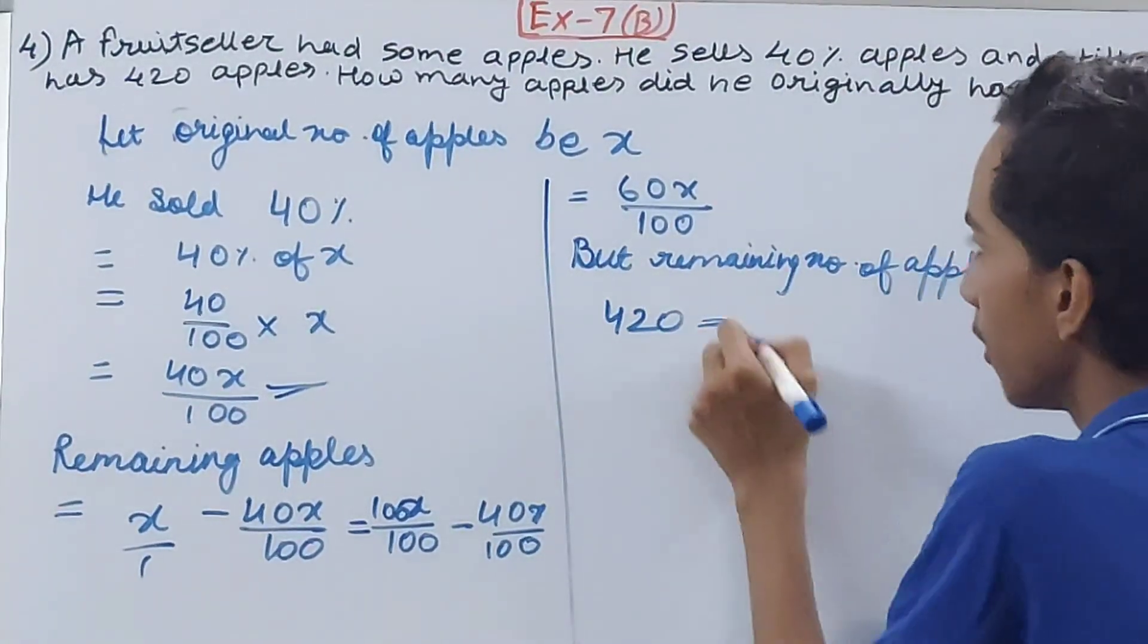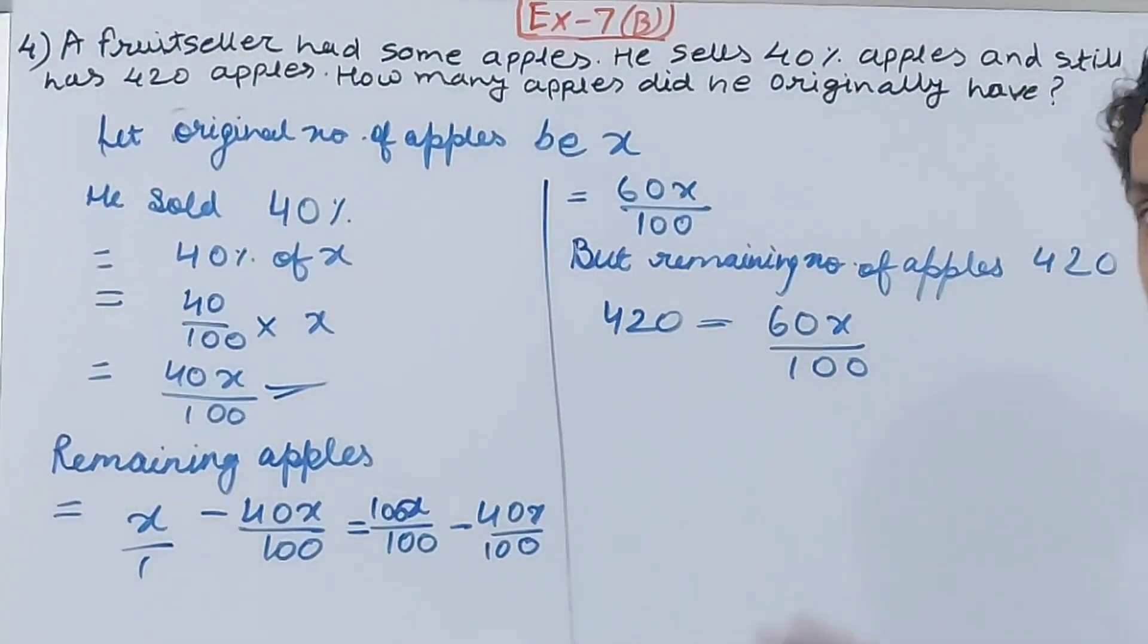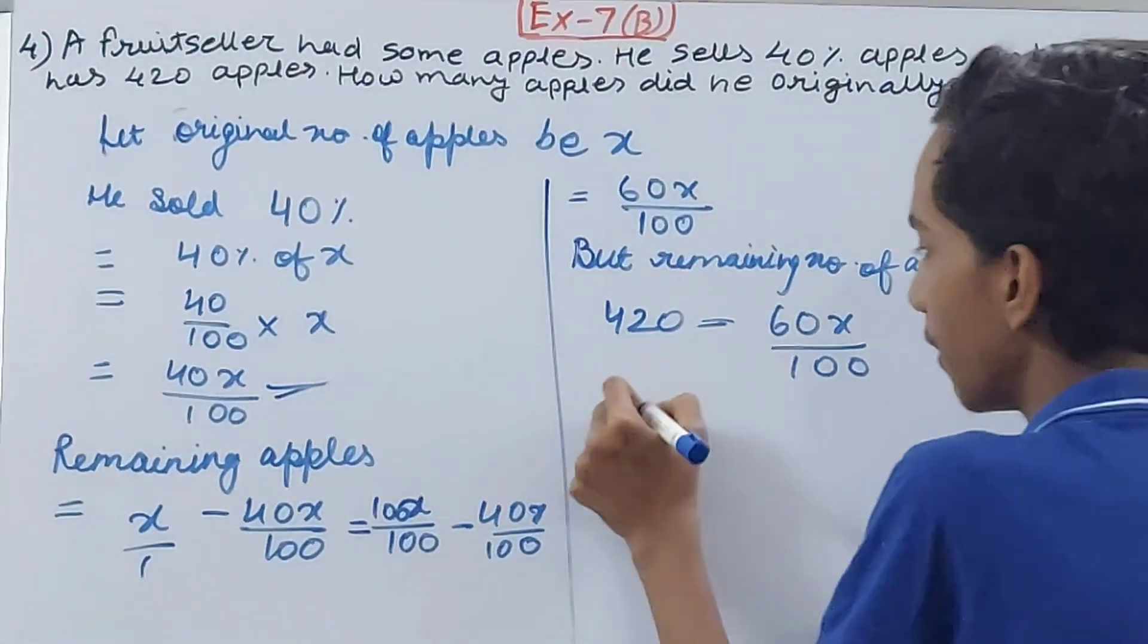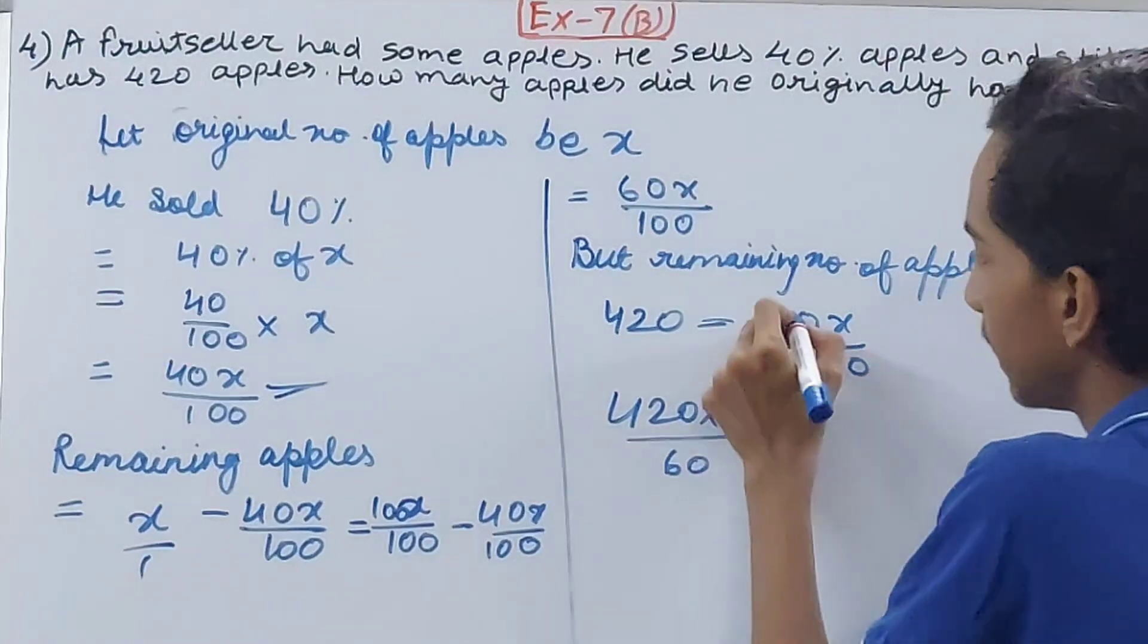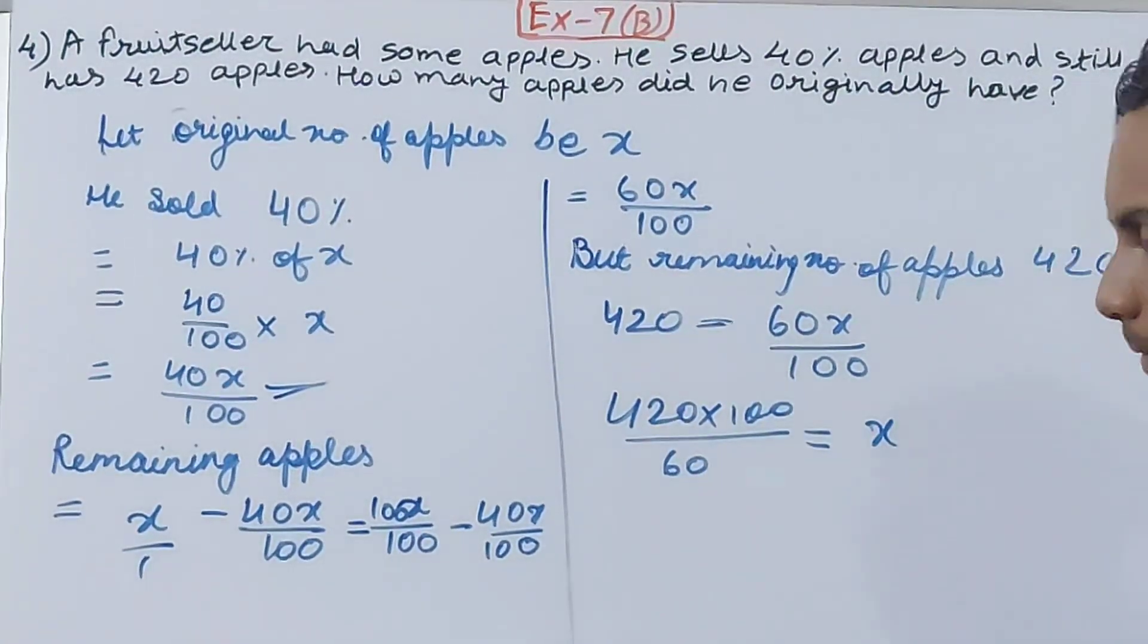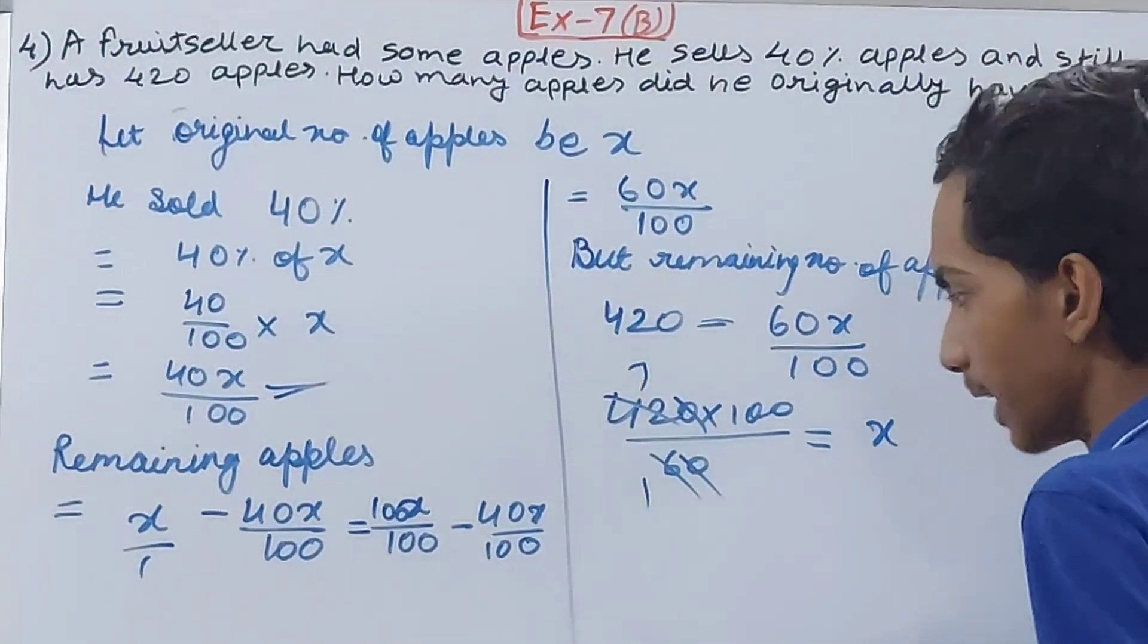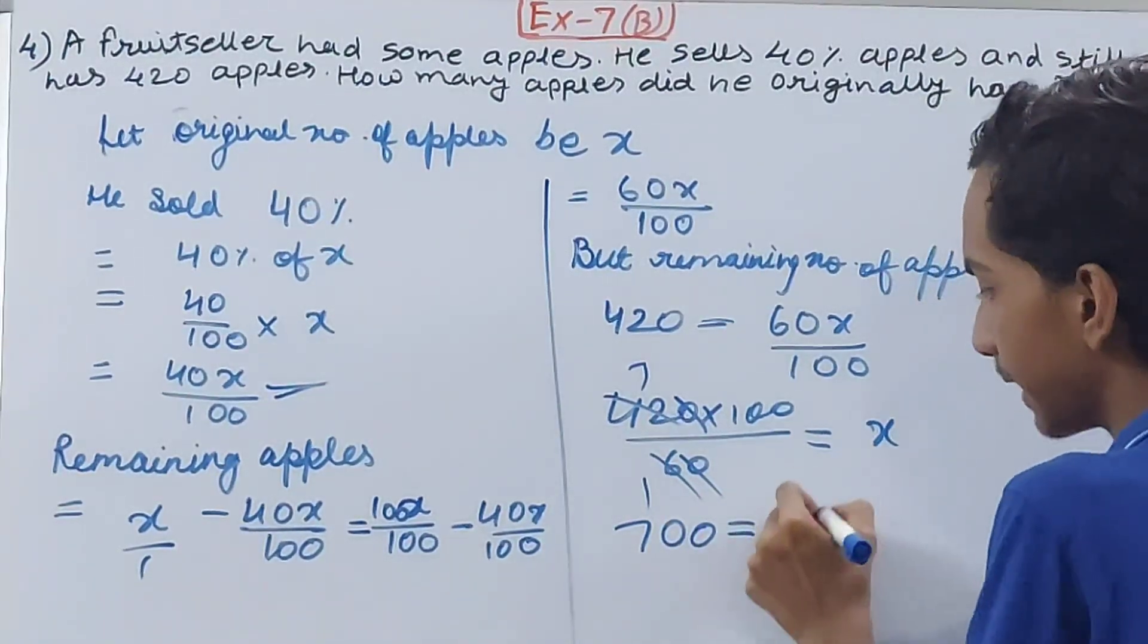Like this: 420 is equal to 60x upon 100. Right, now it is an equation. One unknown is here, so we can find it by using transposition. 420 into 100 upon 60, right? This will come here, so it will reverse. That is equal to x. Right, now you can see here, this 0, this 0 can be cancelled. This 6 and 42 will cancel, this 7 times. 7 into 100 is 700. That is equal to x.